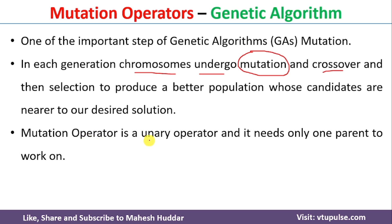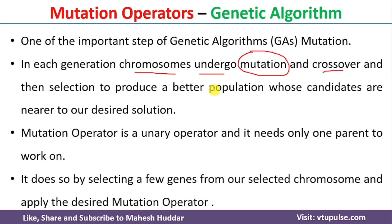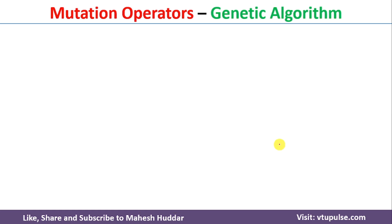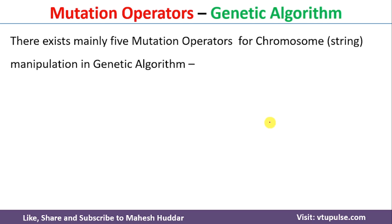Mutation operator is a unary operator and it needs only one parent to work on. There is no need to select two parents, as we do in the crossover operator. Whenever we apply the crossover operator in genetic algorithm, we need to select two parents. But when it comes to mutation, we need to select only one parent and then apply one of the mutation operators so that we will get a new chromosome. The first question is: what are the different mutation operators that exist in genetic algorithm?